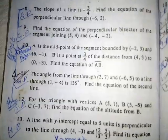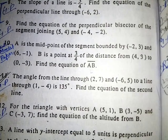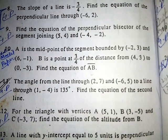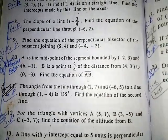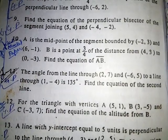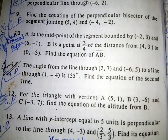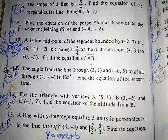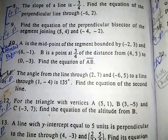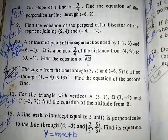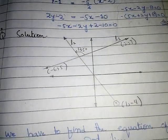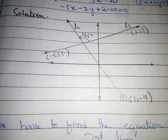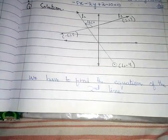Now we learn Question 11. The angle from the line through (2, 7) and (-6, 5) to a line through (1, -4) is 135 degrees. Find the equation of the second line. The points and angle are given; we have to find the equation of the second line. Look at the diagram drawn according to the question.